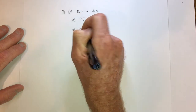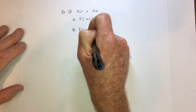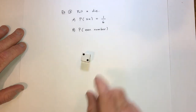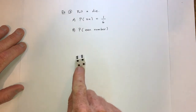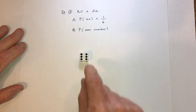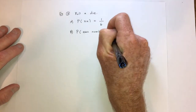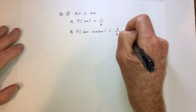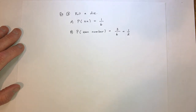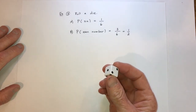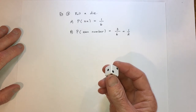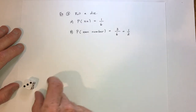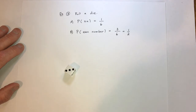For part B, what's the probability of rolling an even number? The even numbers are two, four, and six — so there are three of them out of six total. That reduces to one-half, which means there's a 50% chance of rolling an even number.